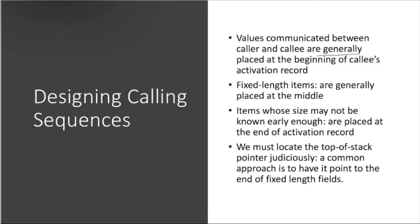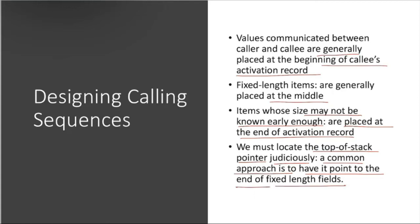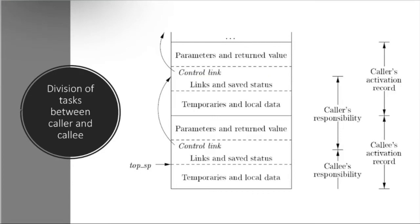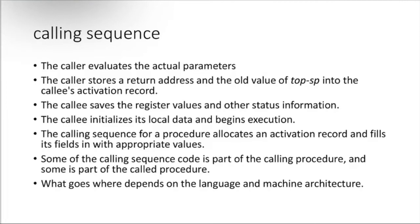Designing the calling sequences: data communicated between caller and callee is generally placed at the beginning of the callee's activation record. Fixed-length items are placed in the middle, and items whose size may not be known early enough are placed at the end. A common approach is to have the top-of-stack pointer point to the end of the fixed-length fields.